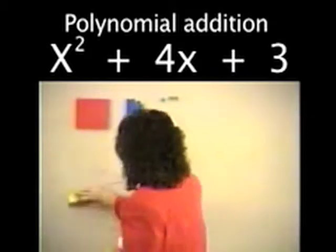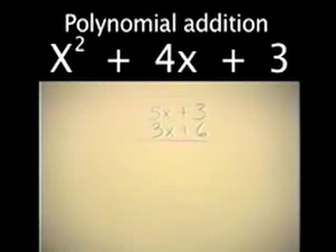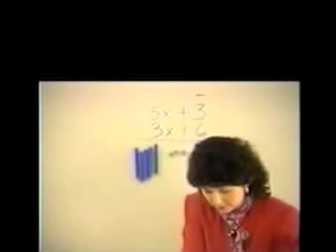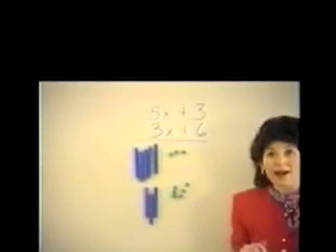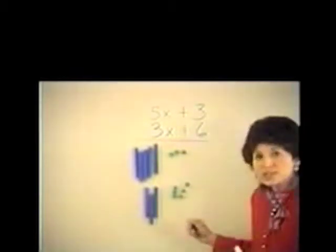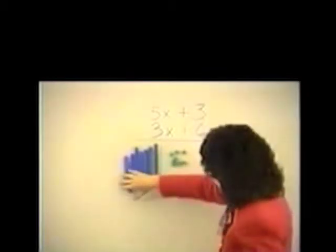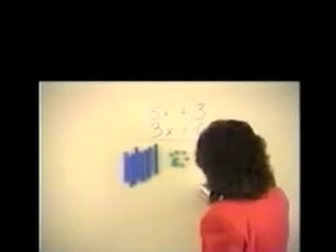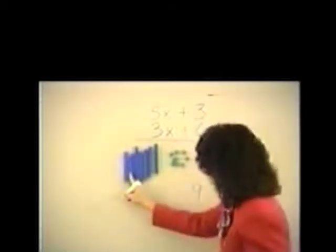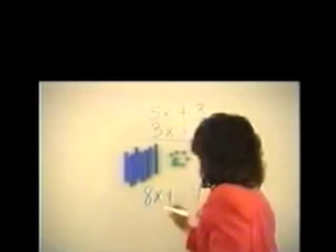Let's do another problem. I've written another problem up here, and I want you to get out the pieces that correspond. So, first, I want you to get out 5X plus 3, and then I want you to get out 3X plus 6. So, you should have something out that looks like this. And now, let's put that together. Now, what do we have? Again, all we need to do is count. We count the units, and we see that we have 9. We count these, and we see that we have 8X. 8X plus 9.